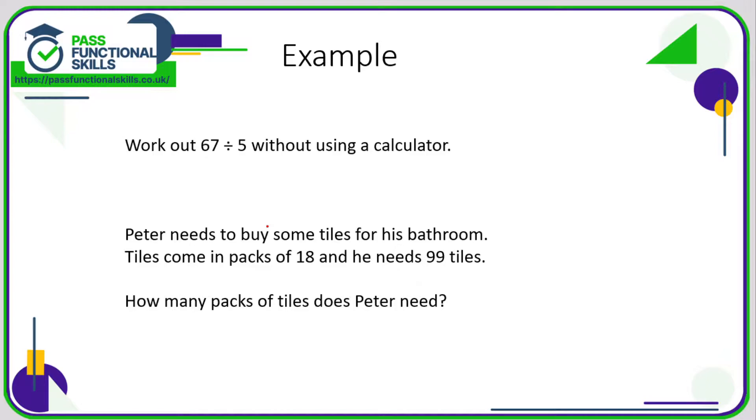Let's take a look at some division examples. 67 divided by 5. So 67 is the number we are dividing, so that goes inside the bus stop, and 5 is what we're dividing by, so that goes outside the bus stop.